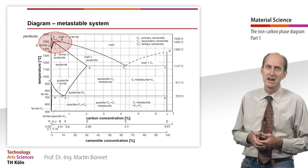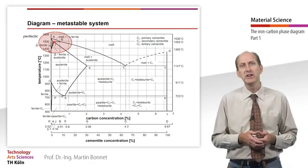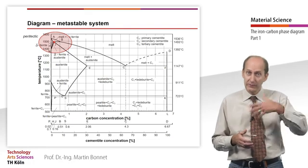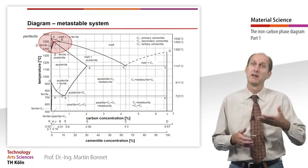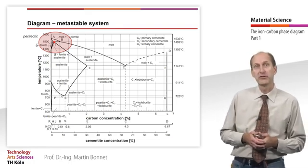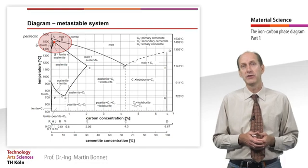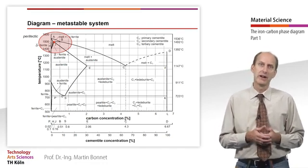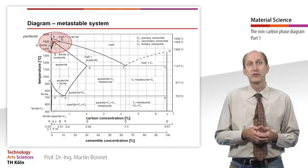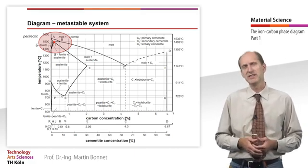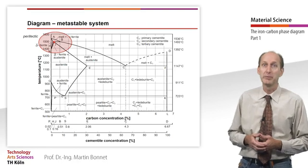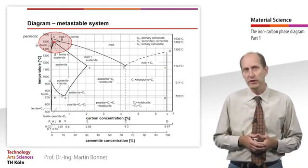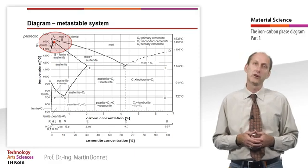At high temperatures and low carbon content, we can see an area which looks like a eutectic system turned upside down at 0.16% carbon and 1493 degrees Celsius. Delta ferrite and the remaining melt transform into austenite. This type of system is referred to as peritectic. However, it is only of minor importance for the technical use of steel.